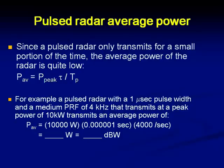Let us spend a bit of time on pulsed radar average power. Since a pulsed radar only transmits for a small portion of the time, the average power is given by the peak power multiplied by pulse duration divided by the total pulse period. For example, a pulsed radar with a 1 microsecond pulse width and a medium PRF of 4 kHz transmits a peak power of 10 kilowatts. In such a case, putting the values into the equation, we get the average power. Normally we express these in terms of dBW.